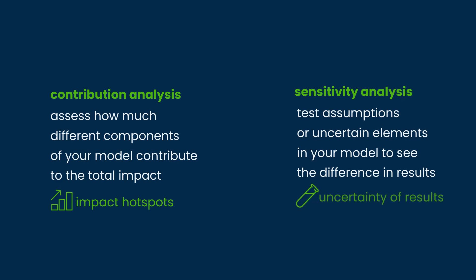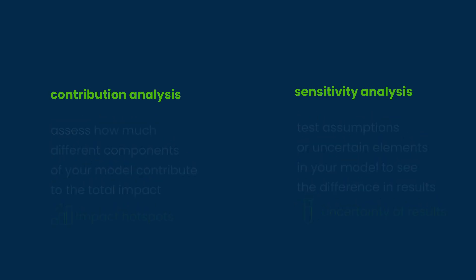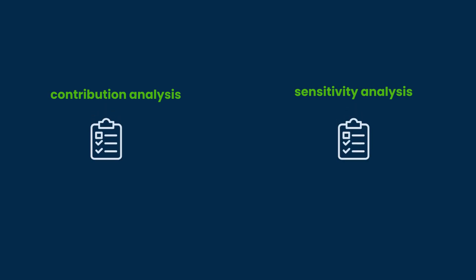Essentially, you test the uncertainty of your results. This is often done by copying your model and changing the selected element to a possible alternative. If you're using LCA to investigate impact improvement measures, you could also use this technique to explore the potential improvement of these measures. Both types of analysis give insights, but they also function as a check of your model. Unexpected results should be investigated further and might lead to changes in earlier phases of the LCA.